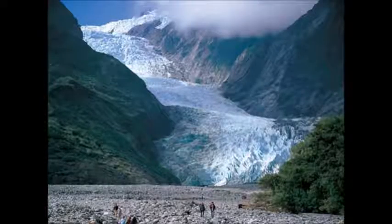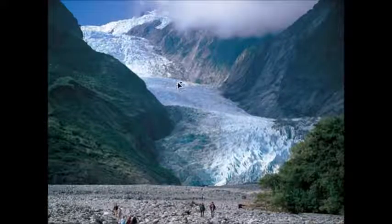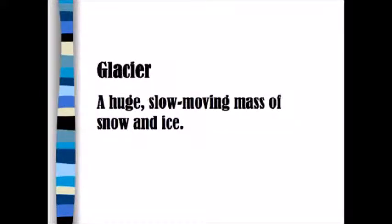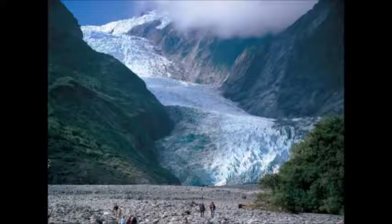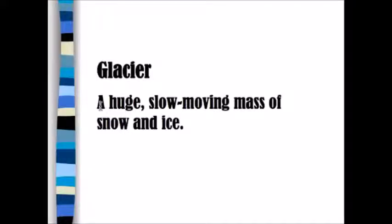Do you know what this is? Notice the people below it — we're looking at what this enormous thing is. If you guessed a glacier, you're correct. A glacier is a huge, slow-moving mass of snow and ice. Notice the size of it compared to the little humans — they're itty-bitty. You can highlight 'mass of snow and ice.'